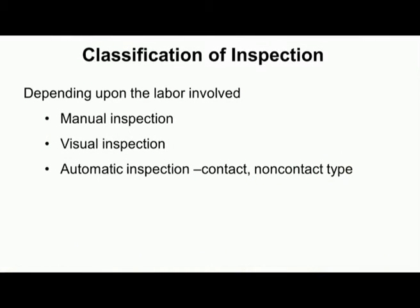In automatic inspection, after production the component is placed on a measuring machine — for example, a coordinate measuring machine where a probe touches various parts of the component to measure physical quantities. In non-contact type, light-based measurement systems measure parameters like surface finish and diameter without touching the work piece; this can also be used during the process as in-process gauging.